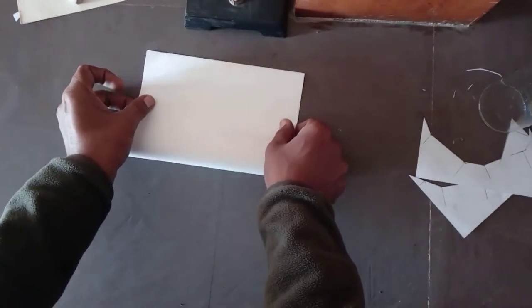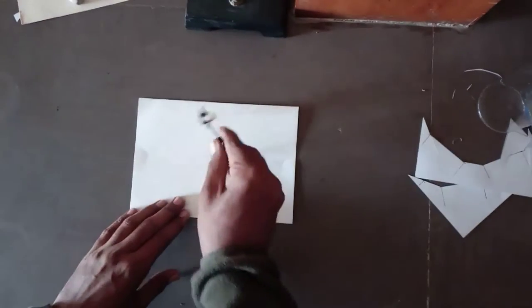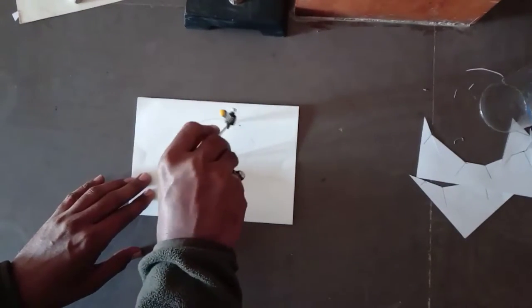Take the sheet and fold it to half. Now make a circle leaving about 1 or 2 cm margin from the sides of the sheet.